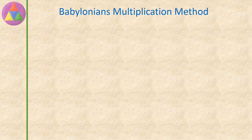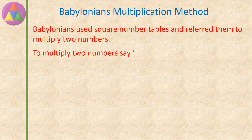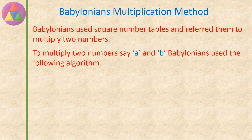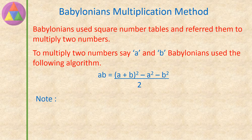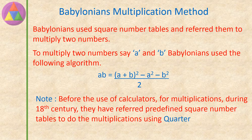The Babylonian's Multiplication Method. Babylonians used square number tables and referred to those tables to multiply two numbers. To multiply two numbers A and B, Babylonians used the following algorithm: AB equals A plus B whole square, minus A square, minus B square, divided by 2. Note: before the use of calculators, during the 18th century, they referred to predefined square number tables to do multiplications using the quarter square method.